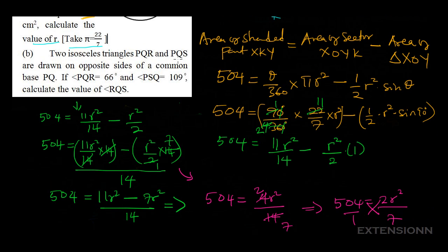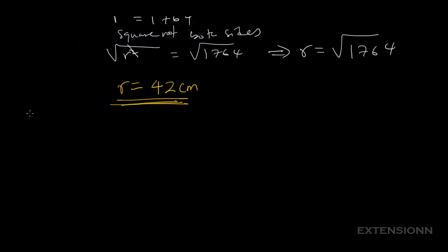Moving to the next question: two isosceles triangles PQR and PQS are drawn on opposite sides of a common base PQ. If angle PQR is 66 degrees and angle PSQ equals 109 degrees, calculate the value of angle RQS. Isosceles triangles are triangles in which two sides are equal.